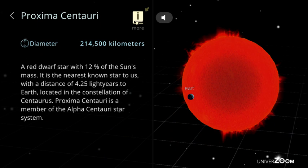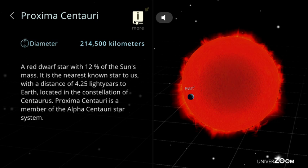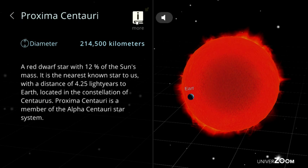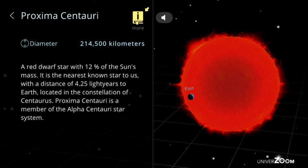Proxima Centauri, diameter: 214,500 kilometers. A red dwarf star with 12% of the Sun's mass. It is the nearest known star to us, with a distance of 4.25 light-years to Earth, located in the constellation of Centaurus. Proxima Centauri is a member of the Alpha Centauri star system.